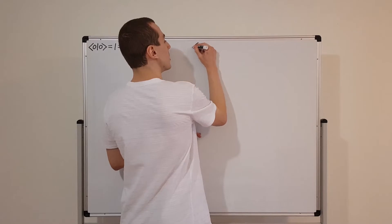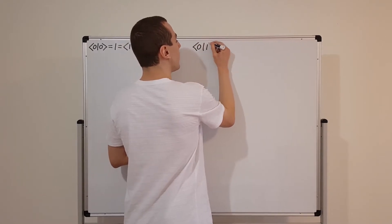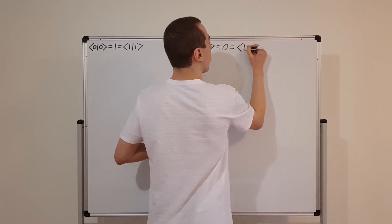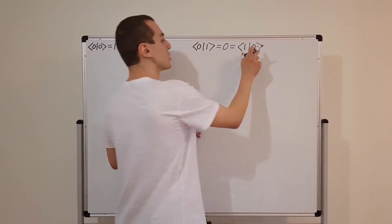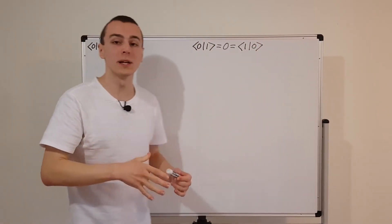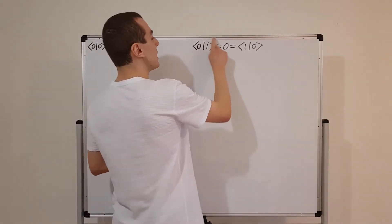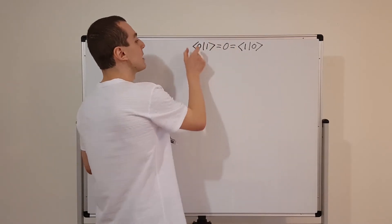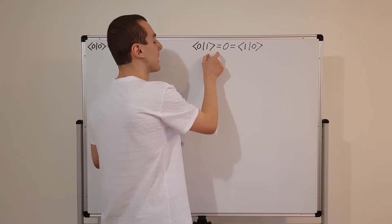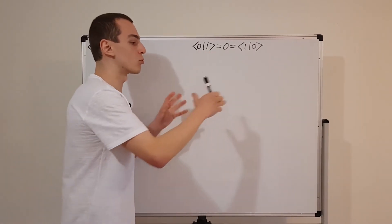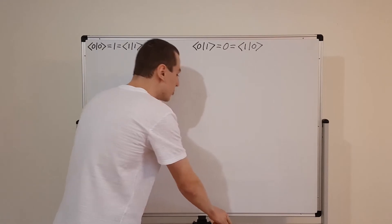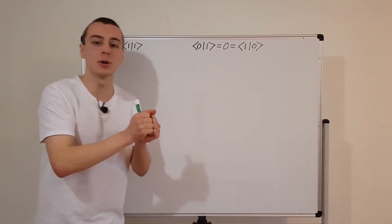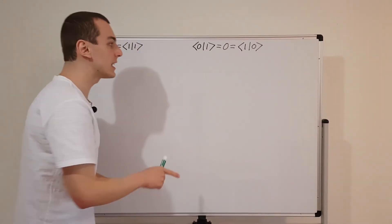The vectors are also mutually orthogonal: the inner product of ⟨0|1⟩ gives 0, and this is exactly the same as ⟨1|0⟩ — swapping the order is effectively taking the complex conjugate. This is the inner product in Dirac notation, with a bra followed by a ket. Now we're going to use ket-bra notation, which is notation for the outer product. That does not give a number — it gives a 2×2 matrix.